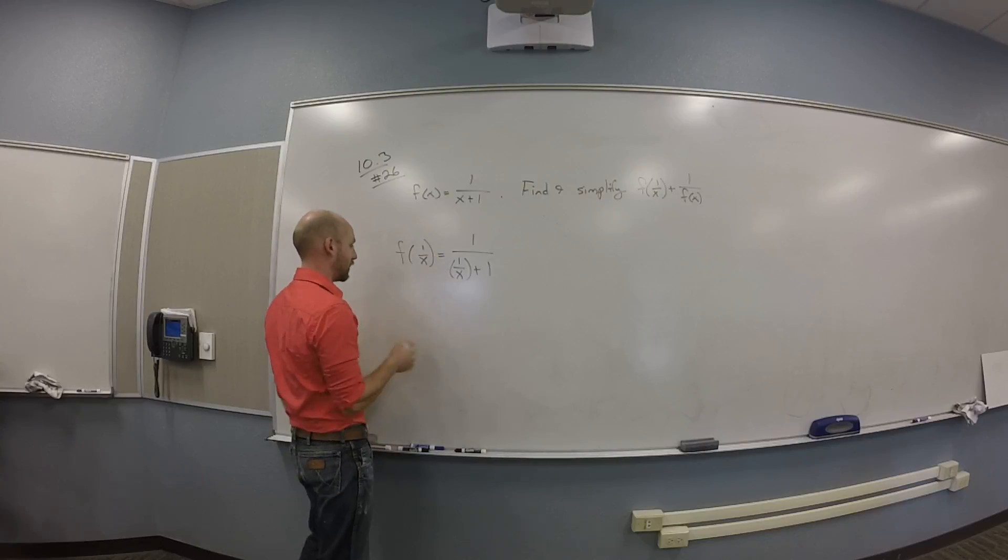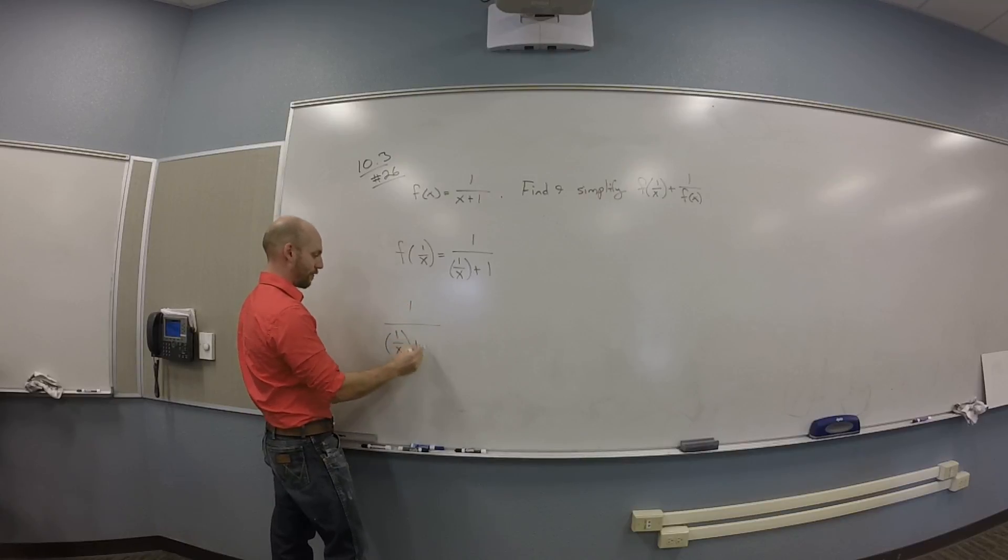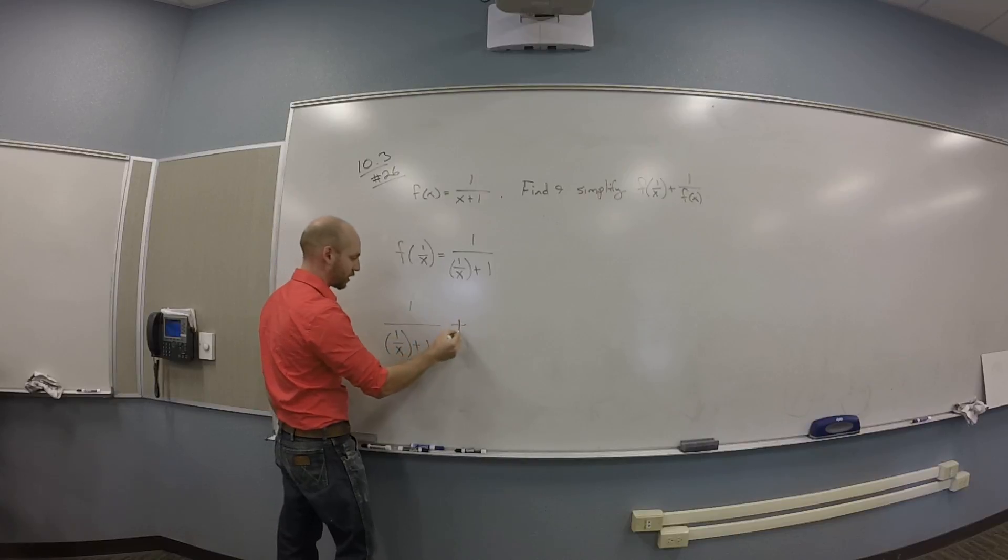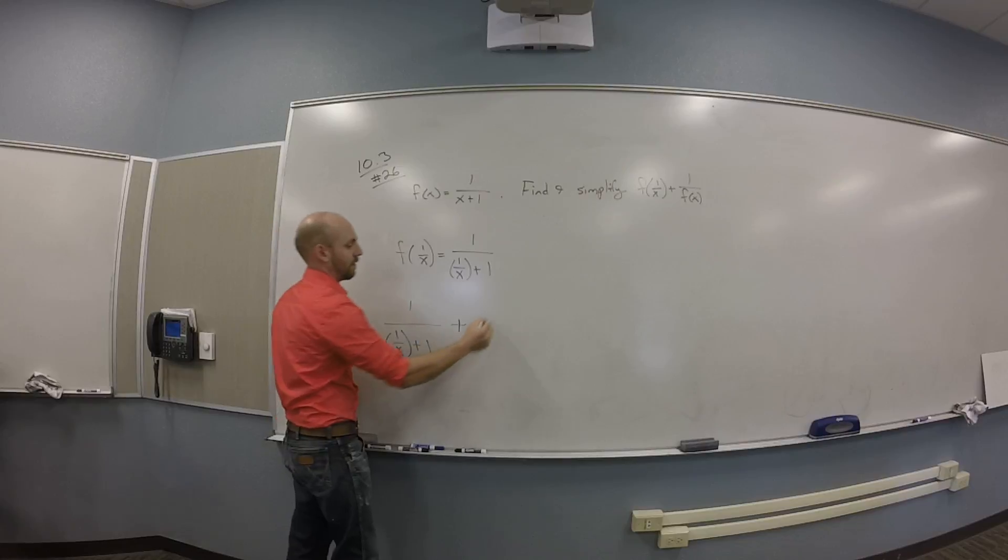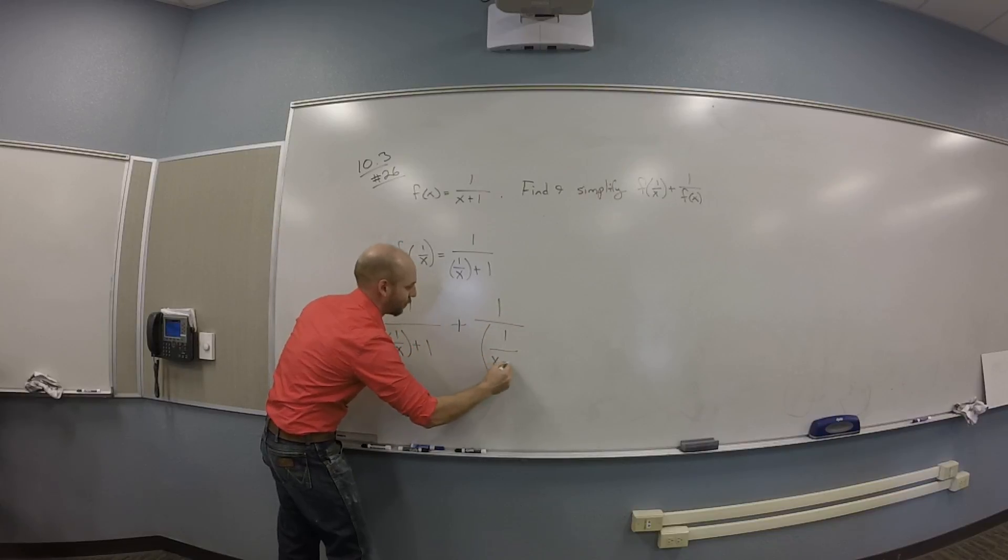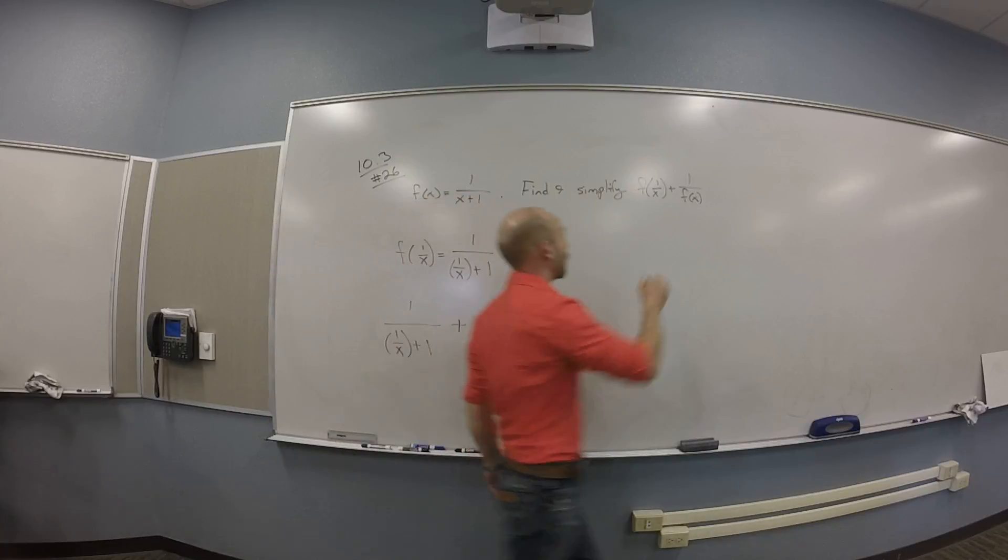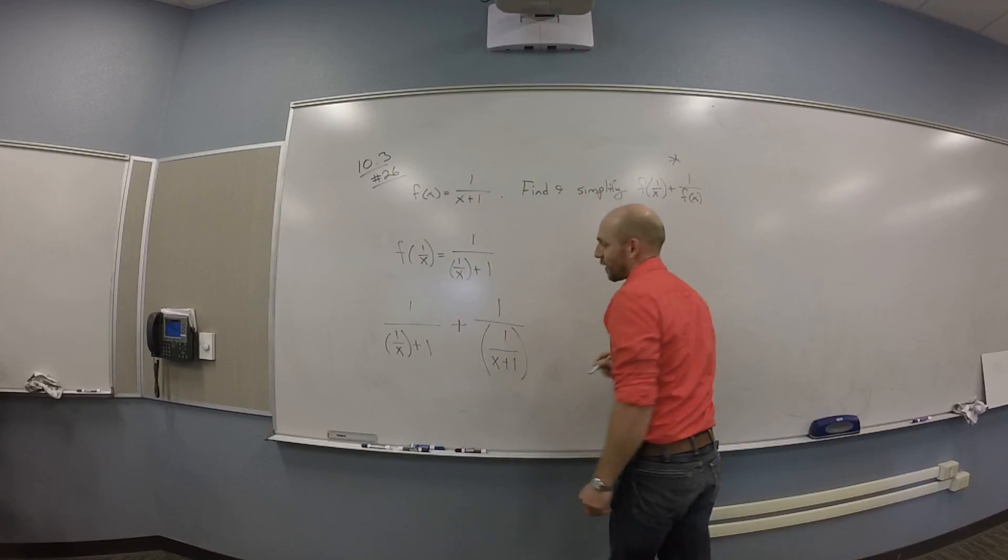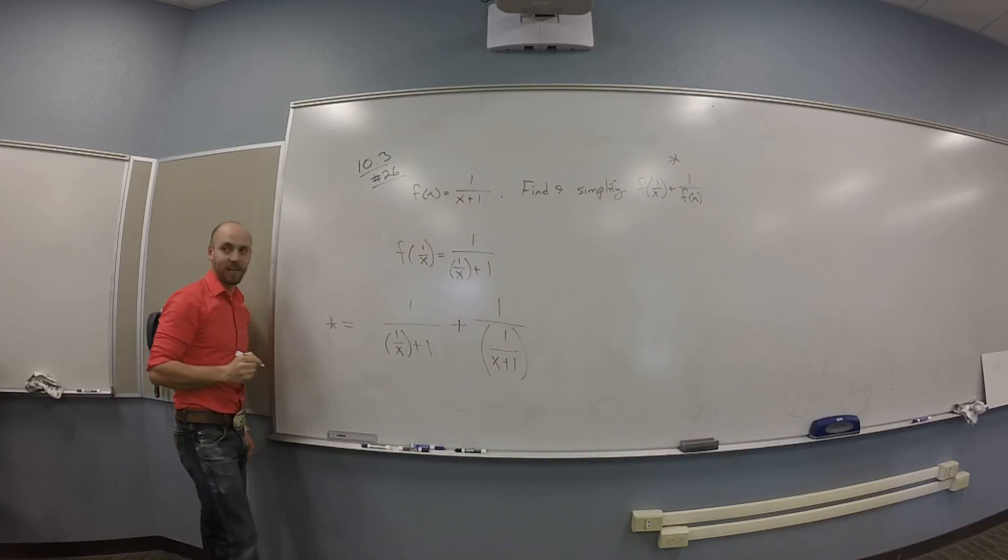All right. Okay, so then I need to take that thing, 1 over 1 over the quantity 1 over x plus 1 plus what? 1 over f of x. Okay. And I'm going to call this thing star so I can stop writing. So star is that stuff.